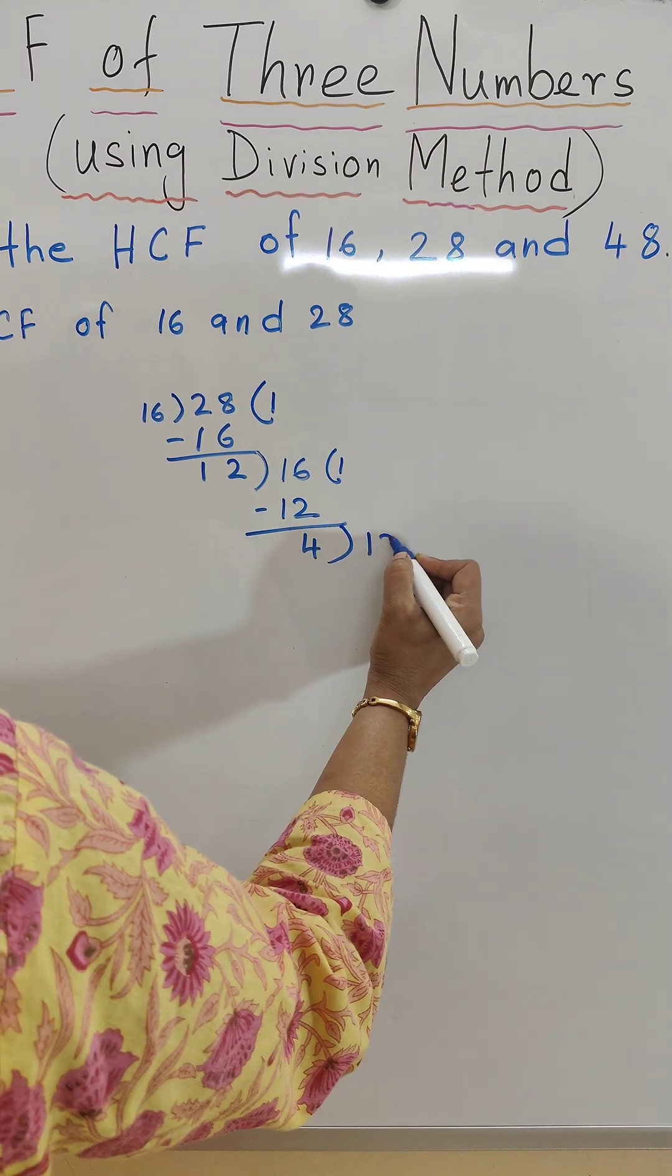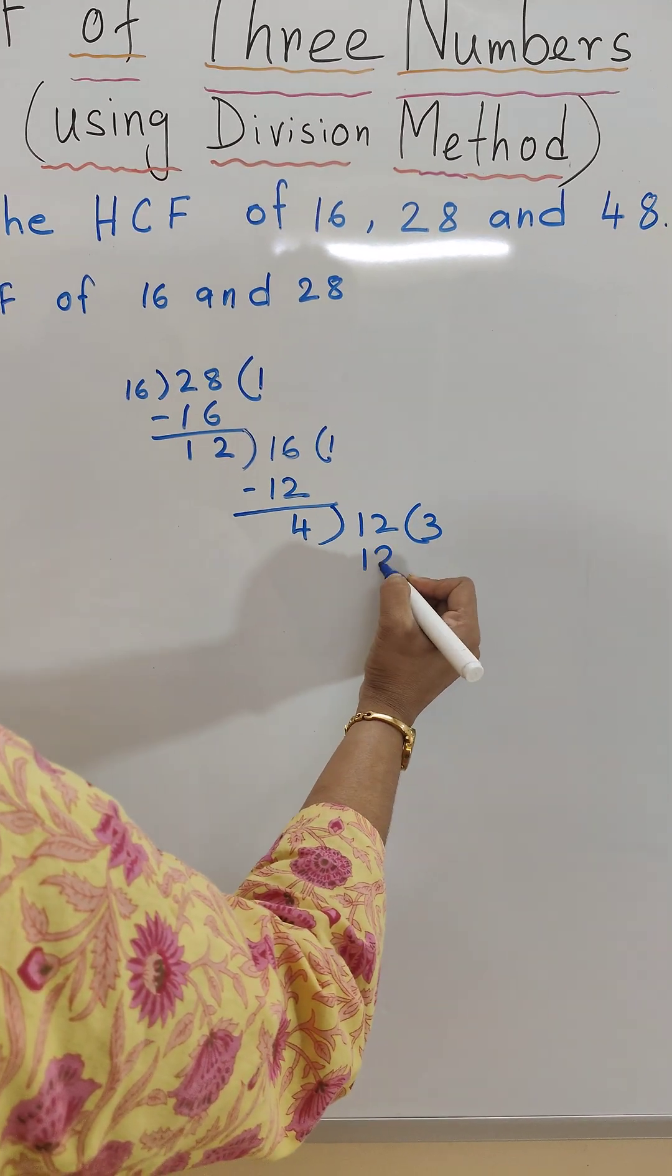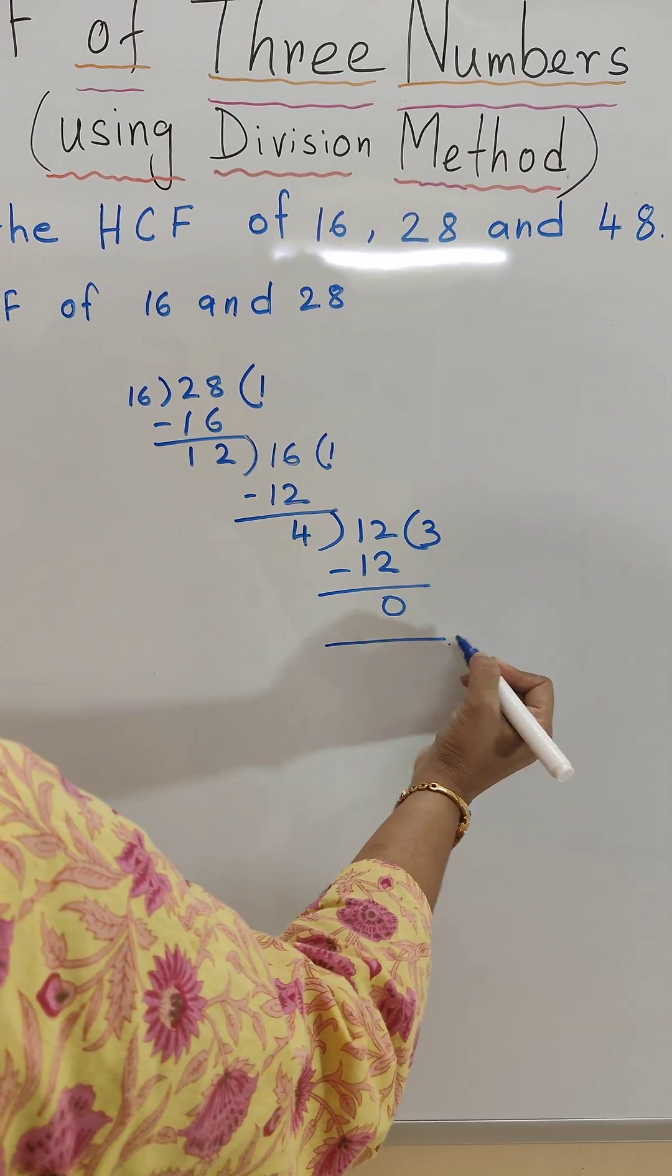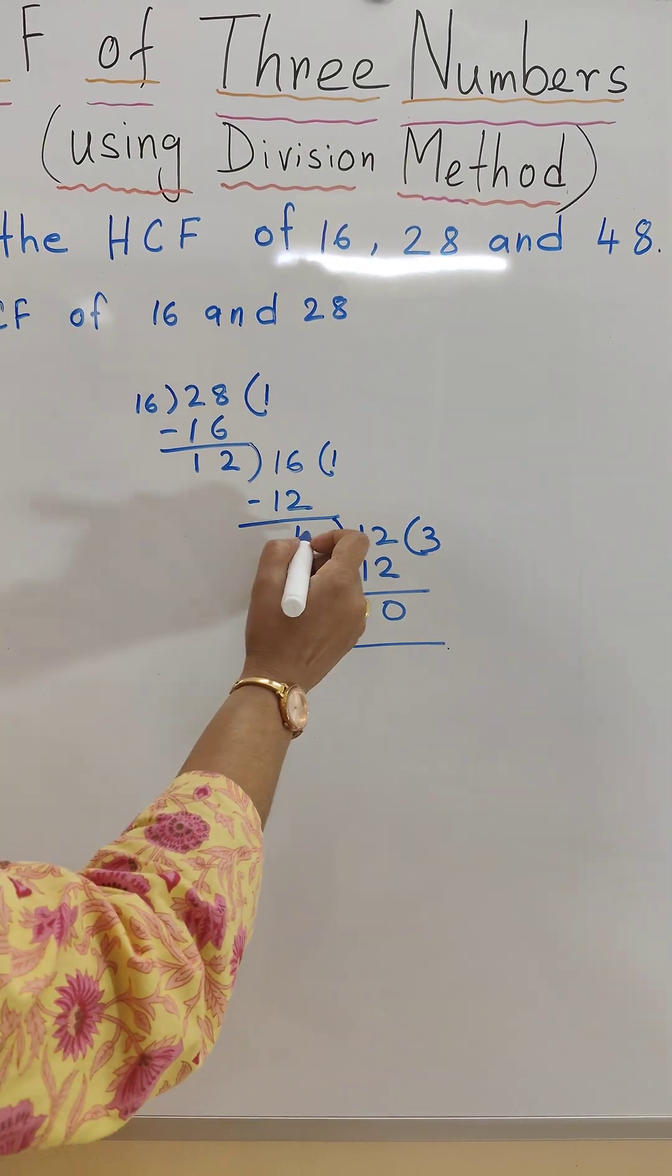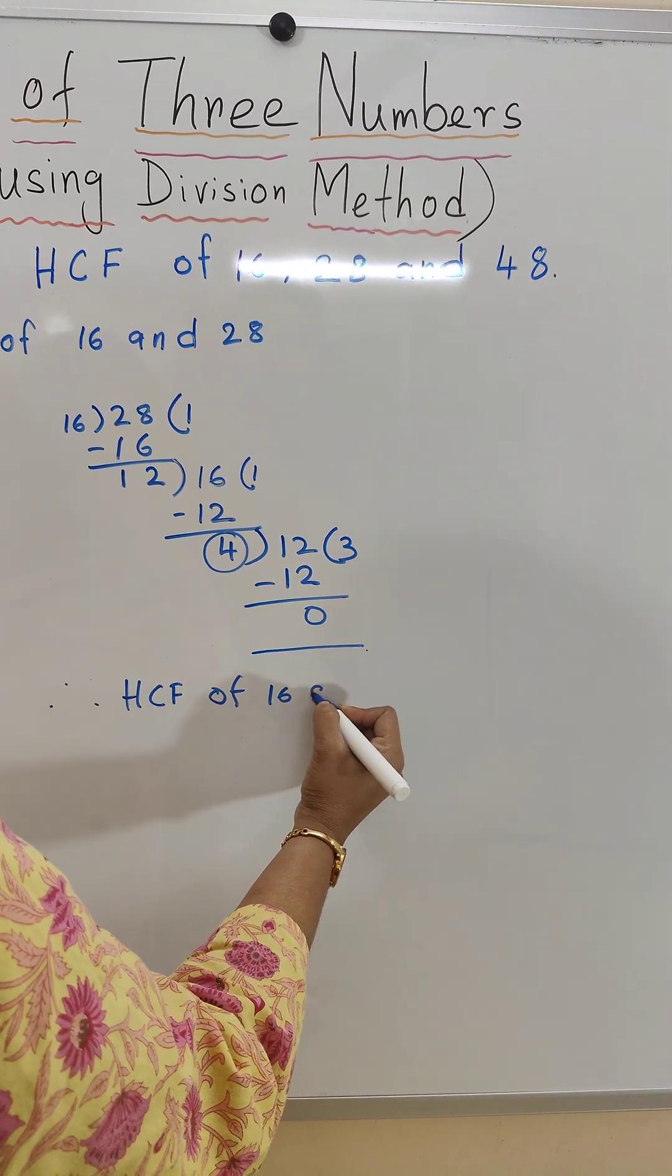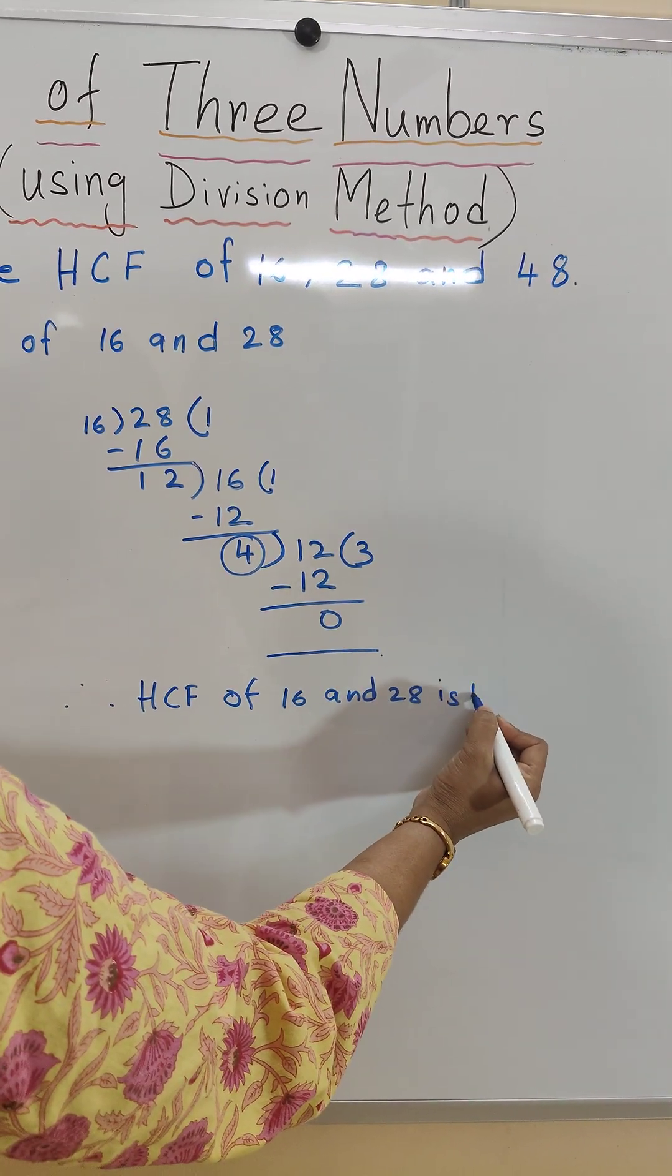Now we will divide 12 by 4. 4 times 3 is 12. 12 minus 12 is 0. So our last divisor is 4. Therefore HCF of 16 and 28 is 4.